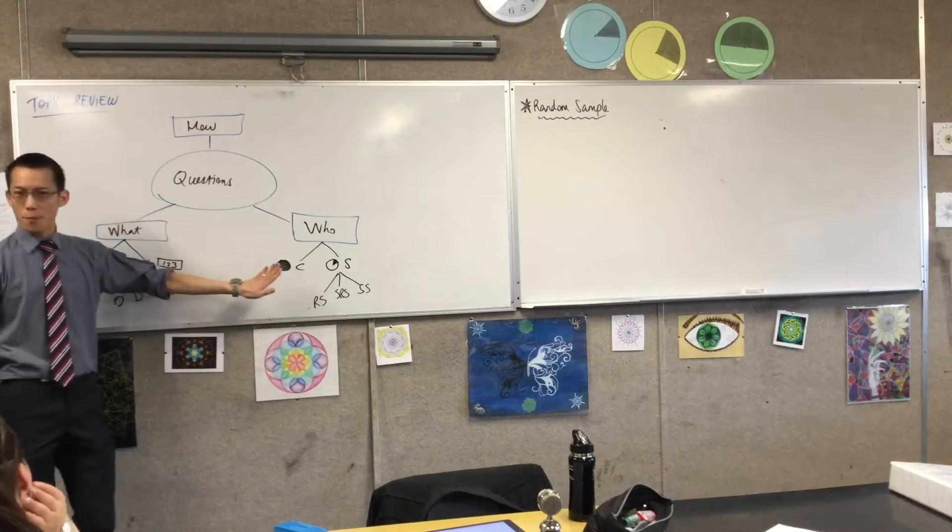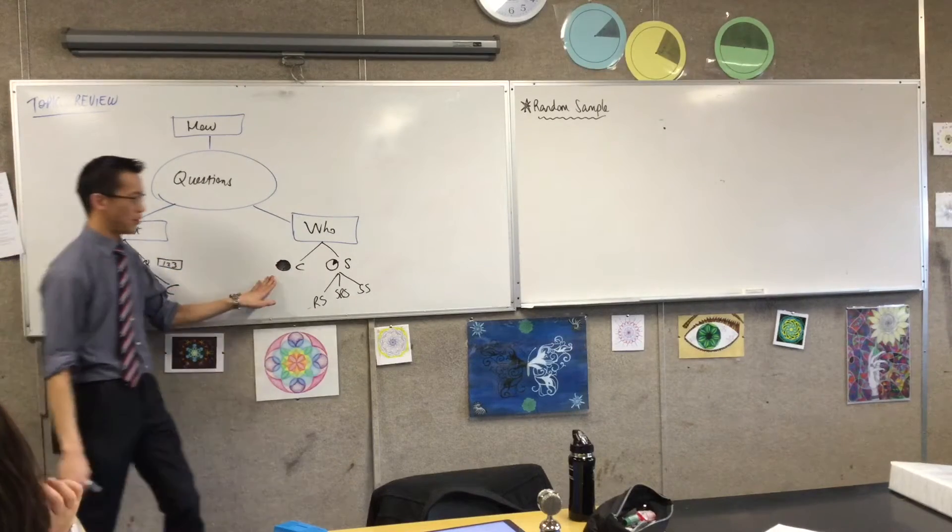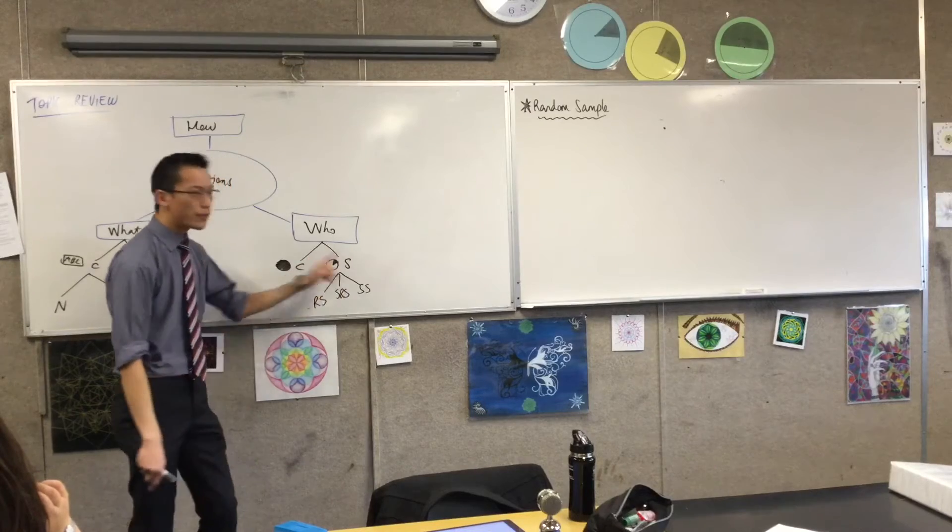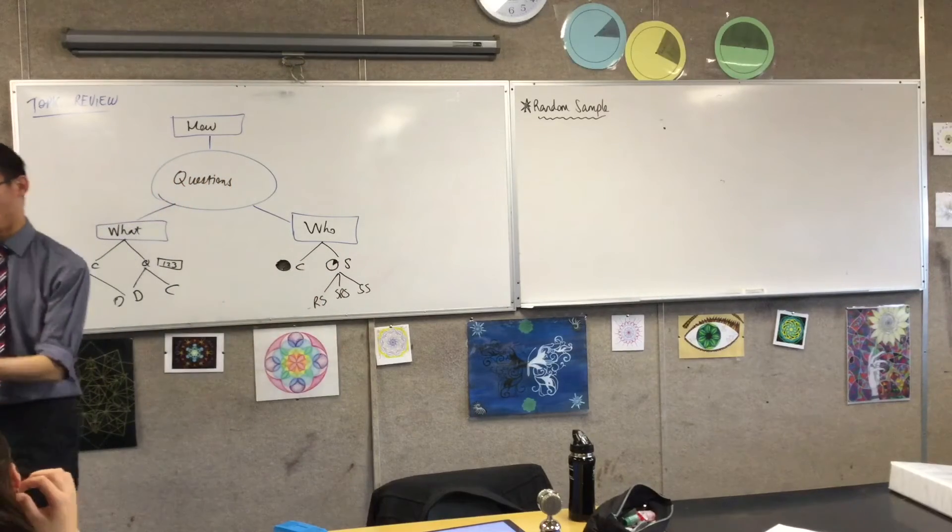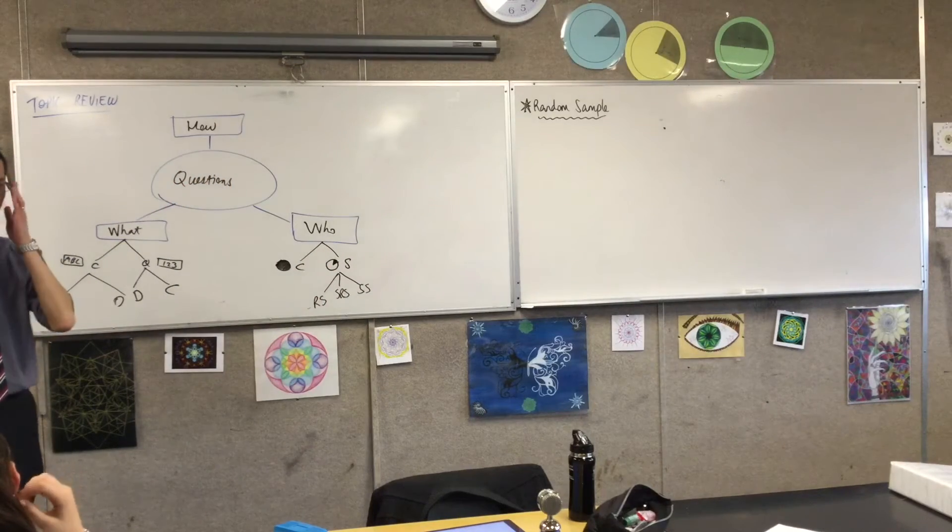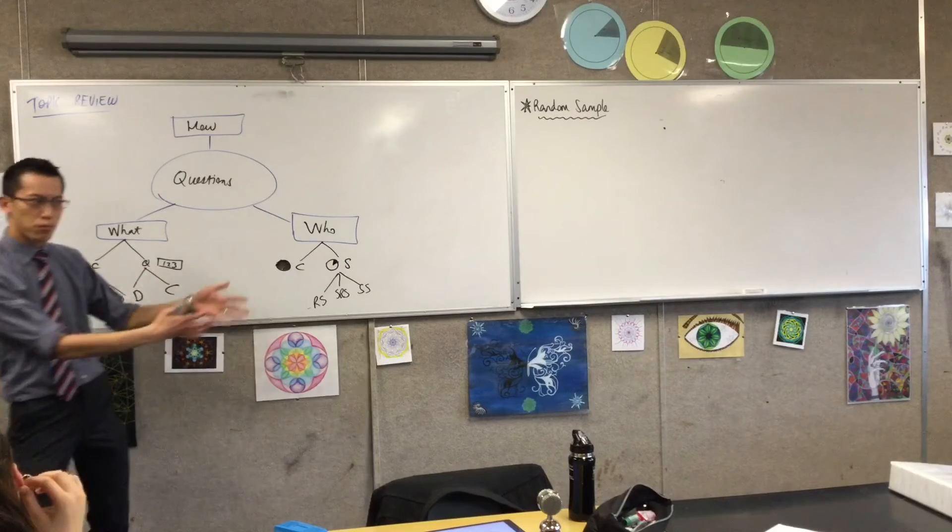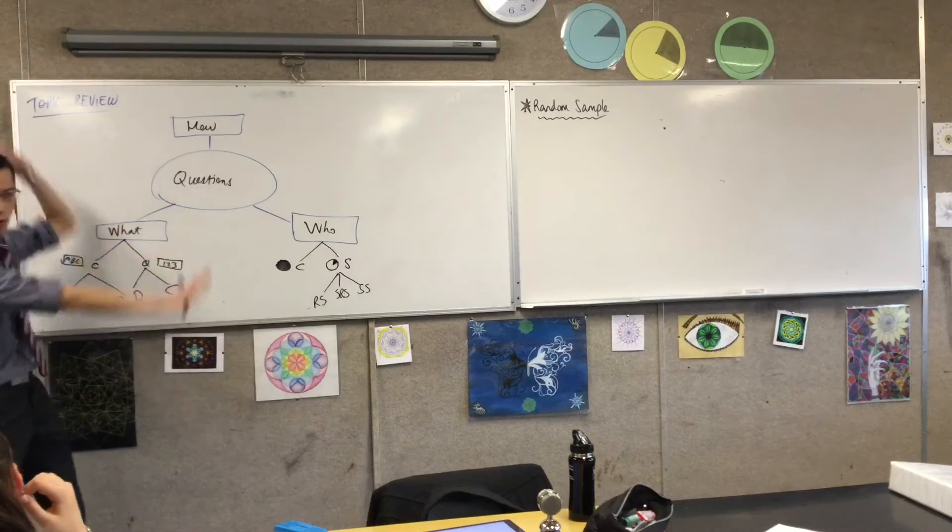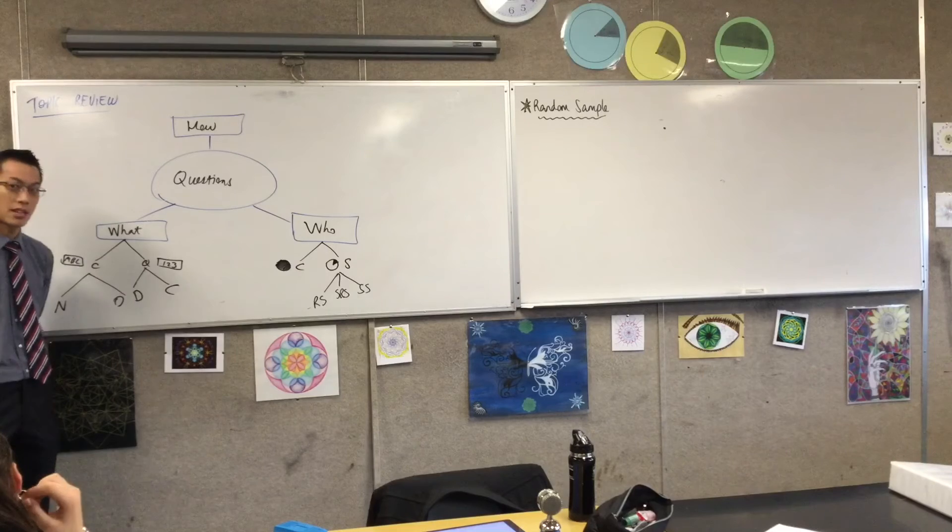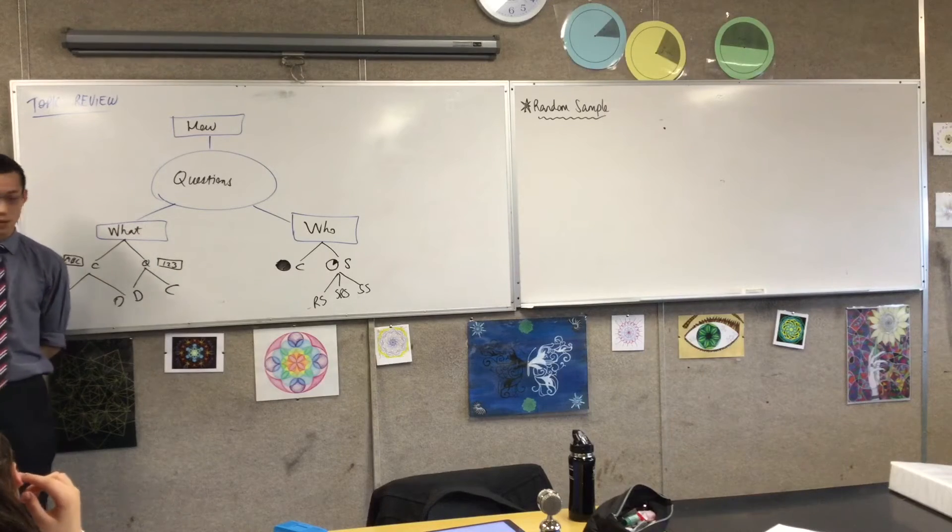When you go from getting everyone's data to getting just a little part of the data, in solving the problem of practicality, and so you can actually get some reasonable amount of data, we introduce a new problem. What's the new problem we introduce? It's a word I haven't put on here at all. Kind of important. Thoughts with a B? Bias. Bias, very good, right?